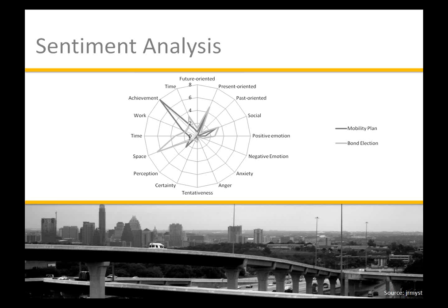We also separated comments about the mobility plan versus the bond election. Microblogs about the mobility plan are achievement-oriented, expressing a sense of accomplishment. While the bond election content talks about real-time present experience, generally expressing more positive emotion than negative. If we wanted to study what was happening in advance of a bond election, using these microblogs may give us some sense of what may happen in an actual election — that there are generally positive feelings about this bond election.